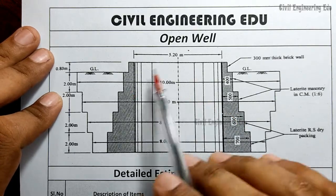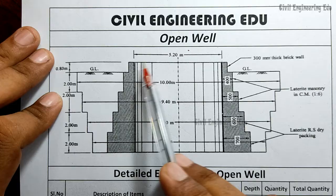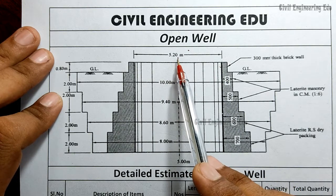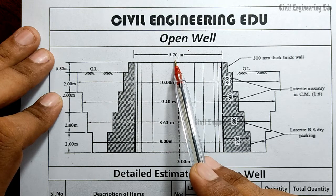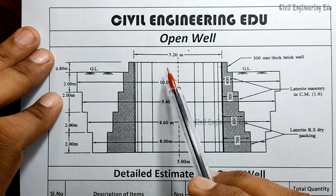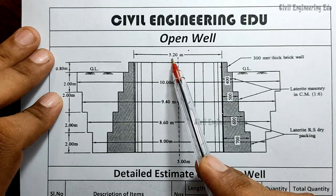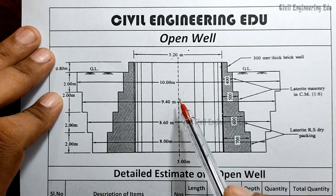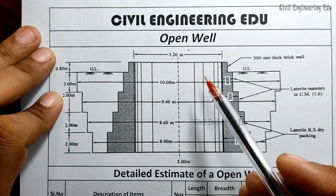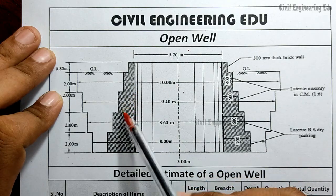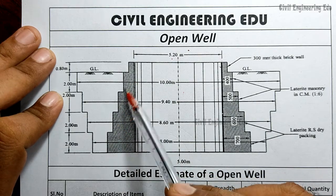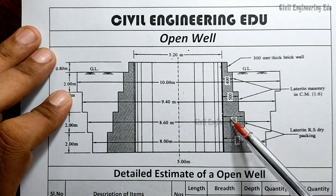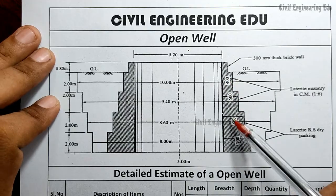Let's try to understand the drawing. This clear opening has a dimension of 5.2 meters — that is the diameter. This open well is in the shape of a right circular well, so 5.2 meters is the clear opening diameter and it is open to sky. On the other sides we are going to construct the masonry, which is the hatched portion you can see here.